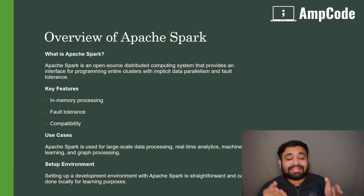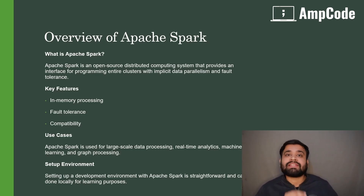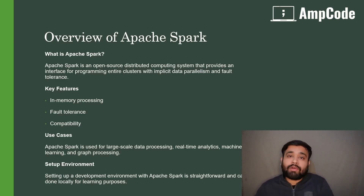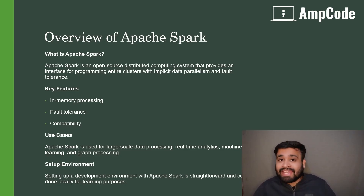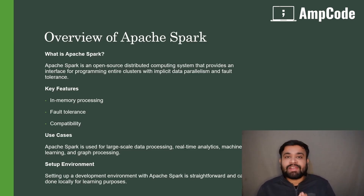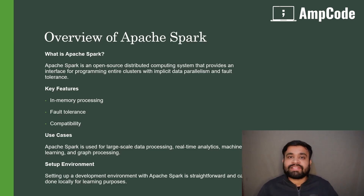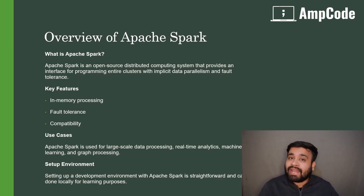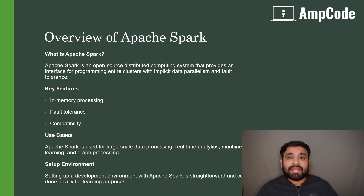A key feature of Apache Spark is its in-memory processing, which makes it very special. Hadoop reads and writes data to disk, so there is a lot of disk I/O involved. Spark, on the other hand, processes data in memory — in RAM — making data access much faster. This reduces I/O activity, making Spark well-suited for iterative transformations and real-time insights. That's why Apache Spark is significantly faster than Hadoop for processing big data.